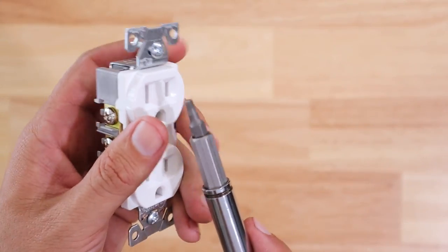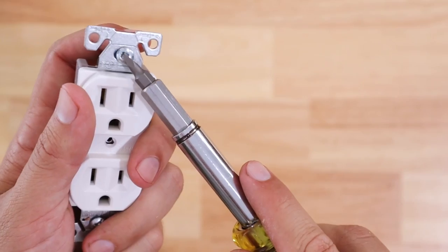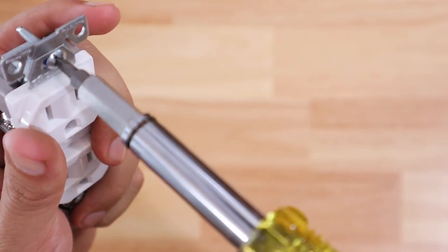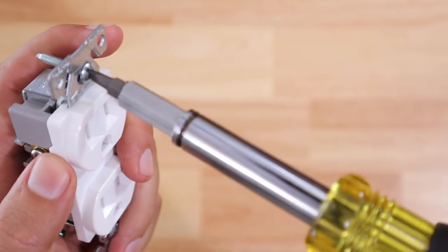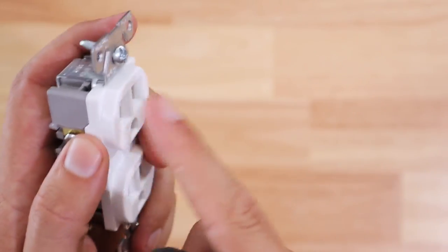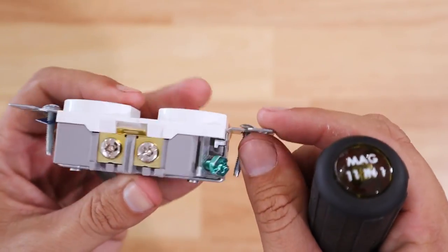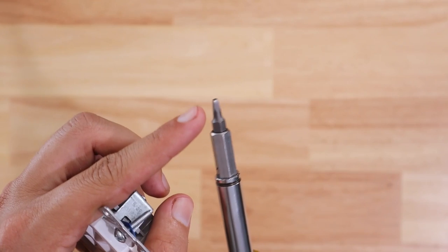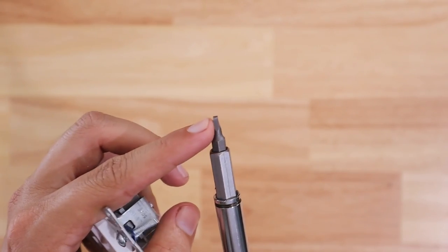The other nice thing about this Robertson bit is it works also on these top screws that then screw into the box really well. So you have no issues with making sure that you're able to tighten your outlet all the way down into the box nice and firm.